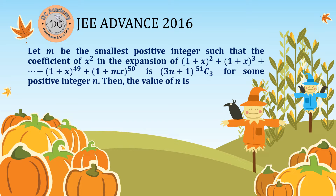In this problem we're going to solve a JEE Advanced 2016 problem. It is given that n is the smallest positive integer such that the coefficient of x² in the expansion of (1+x)² · (1+x)³ and so on is equal to (3n+1)·⁵¹C₃. We have to find the value of n.